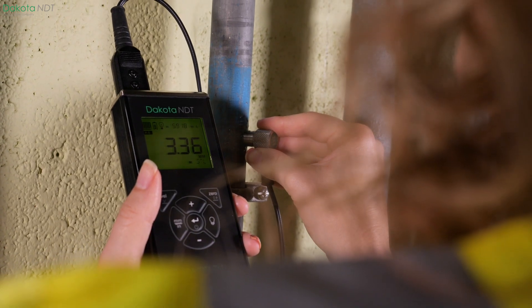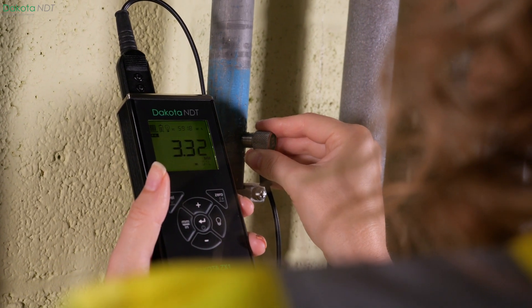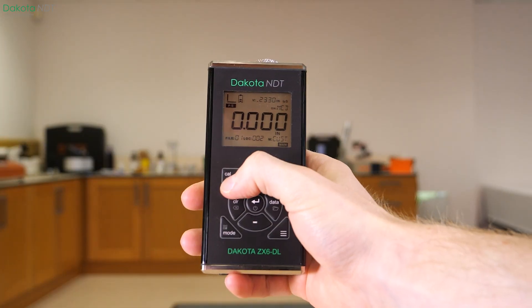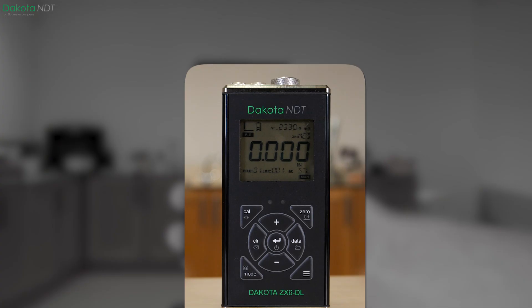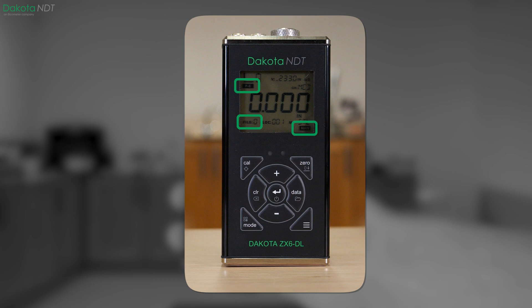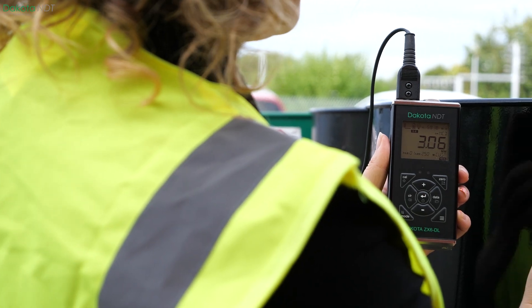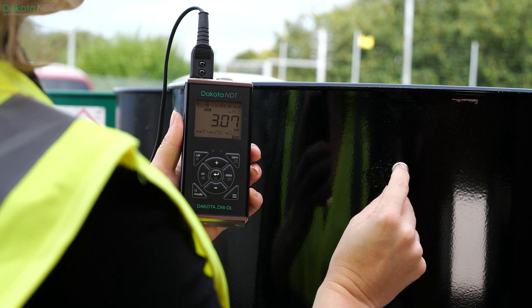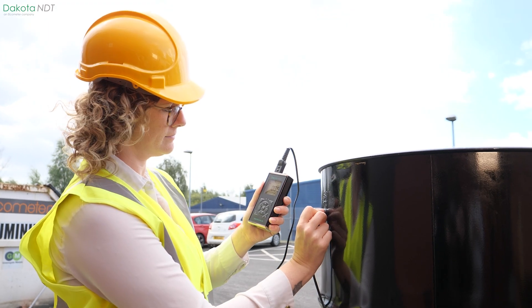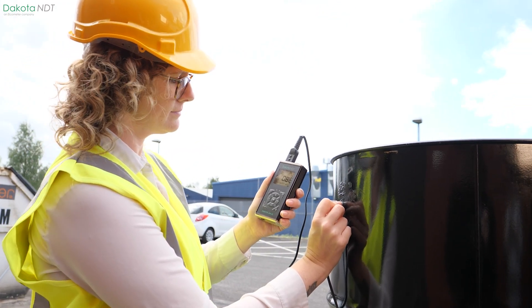Not only that, the Dakota NDT ZX range also features a multi-functional LCD display, additional icons to indicate modes and features, plus selectable brightness and backlight. Giving the gauge an advantage while working outside in various conditions such as sunlight.